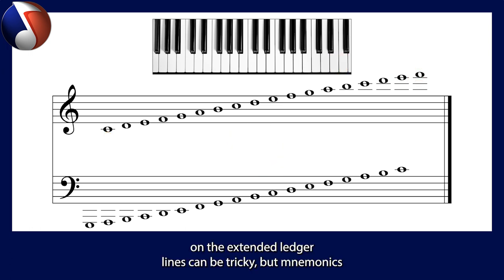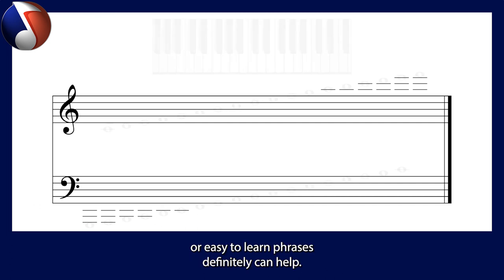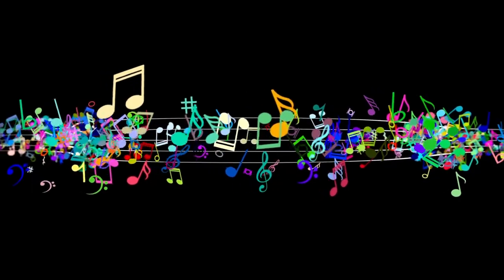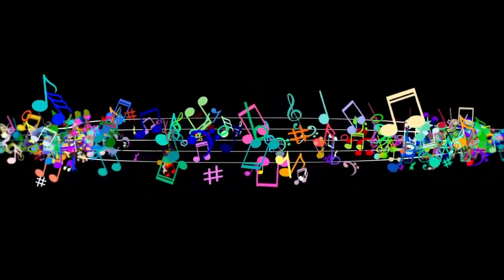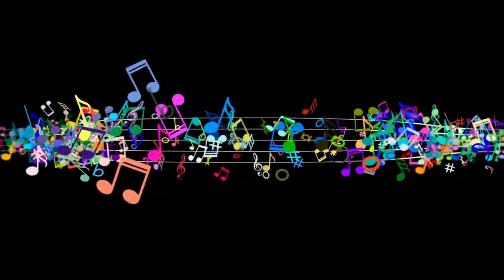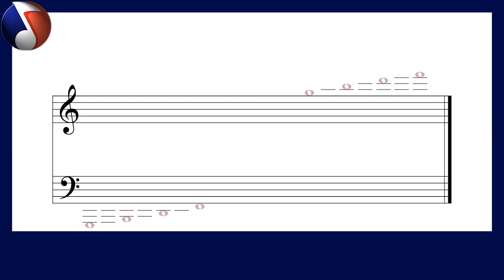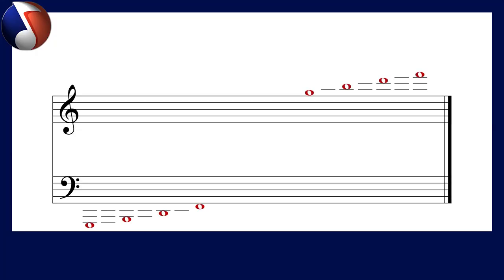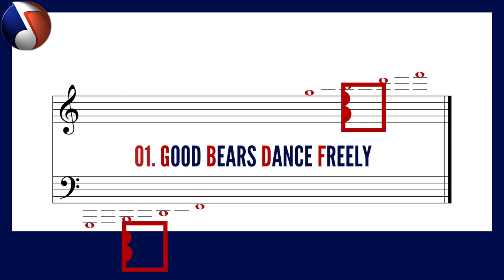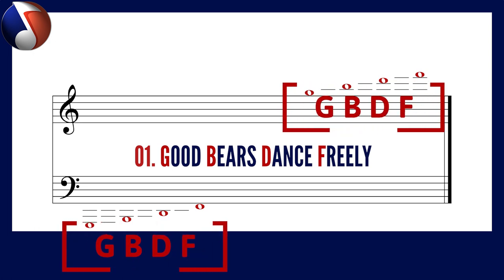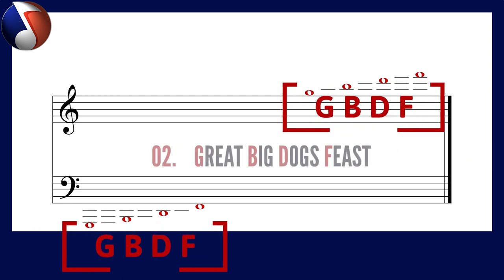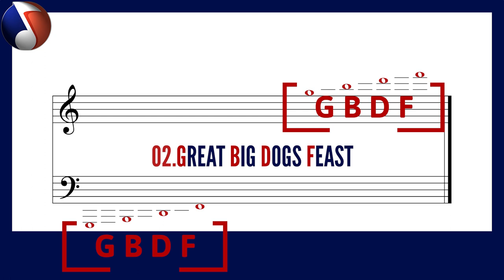Remembering the notes on the extended ledger lines can be tricky, but mnemonics or easy-to-learn phrases can definitely help. Here's a couple I've made earlier — for the treble clef notes in between the ledger lines you can use phrases like 'Good Bears Dance Freely' or 'Great Big Dogs Feast'.